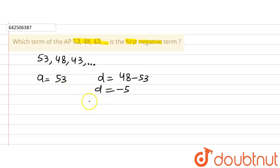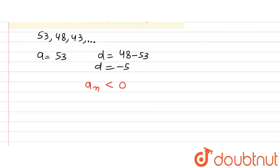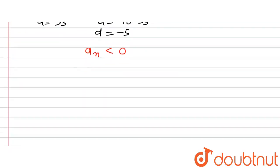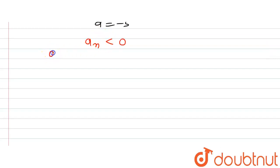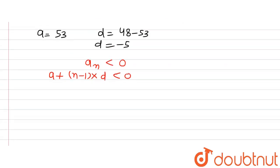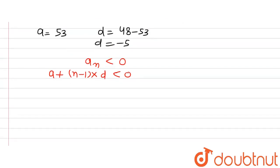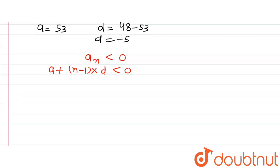Now, let us assume that the nth term is less than 0, meaning it is negative. We know the formula for the nth term of an AP: A plus (N minus 1) multiplied by D is less than 0. Let us put in the values of A and D and solve this inequality for N. Putting in the values: 53 plus (N minus 1) multiplied by minus 5 is less than 0.